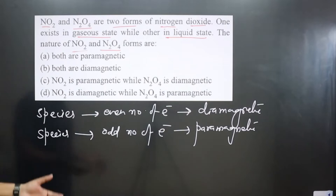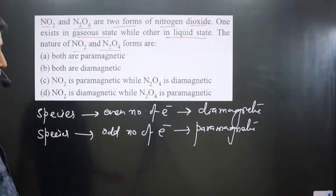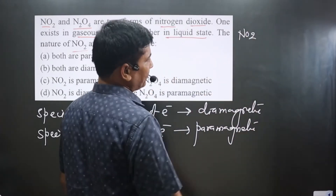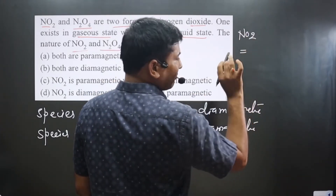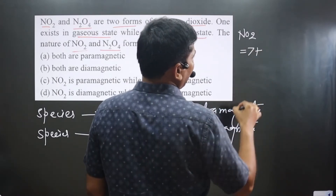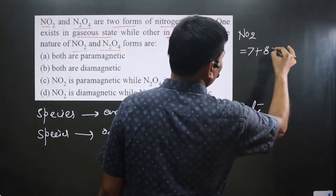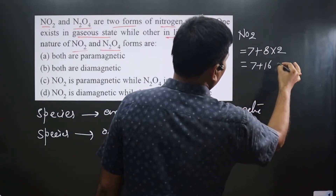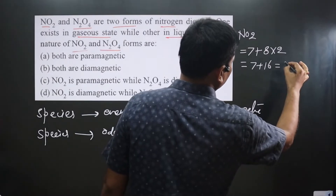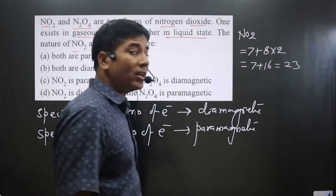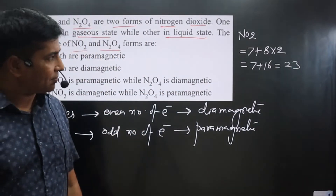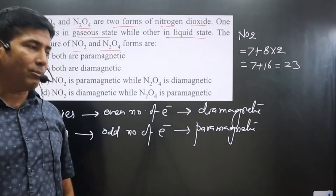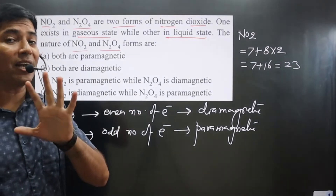We can calculate the number of electrons present in these molecules. For NO₂: the atomic number of nitrogen is 7, and each oxygen is 8, with 2 oxygens giving 16. So 7 plus 16 equals 23 total electrons. You can see it is an odd number of electrons, meaning NO₂ has 1 unpaired electron.